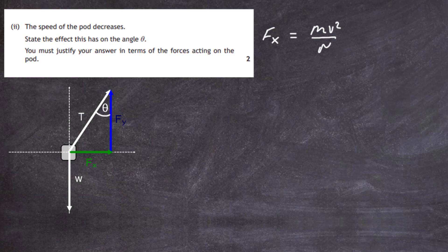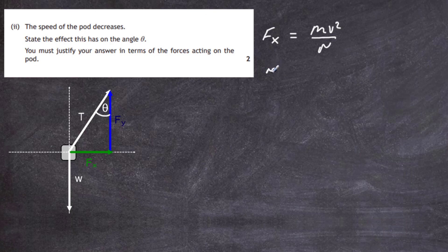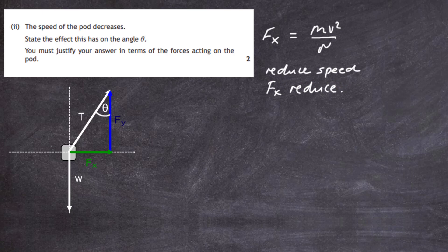There is no horizontal component due to the weight, since the weight is perpendicular to the horizontal axis. The vertical component of tension, fy, must equal the weight to balance it — and the weight is unchanging, so fy stays the same. From fx = mv²/r, if we reduce the speed, and since v is squared, fx will definitely reduce. The radius r will also reduce, but because v is squared, reducing speed causes fx to decrease significantly.